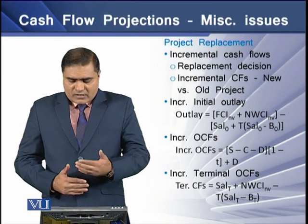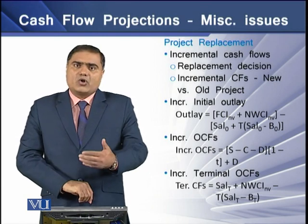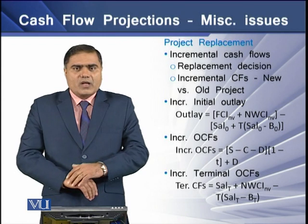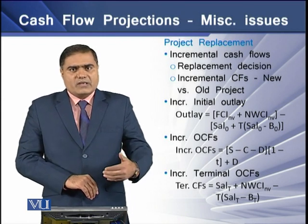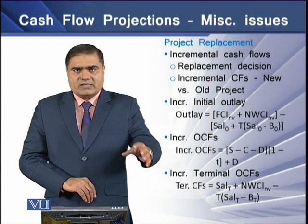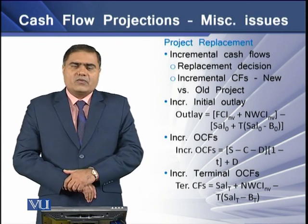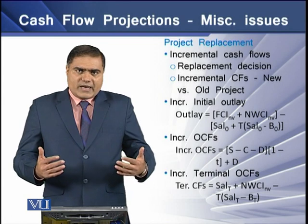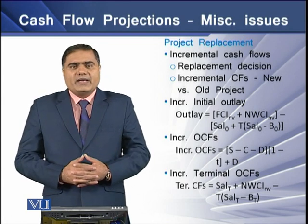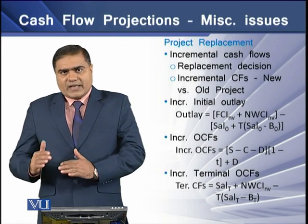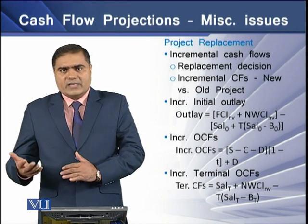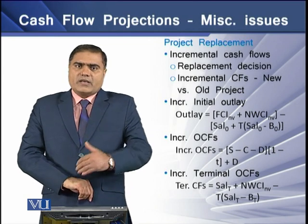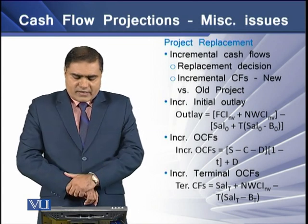The third cash flow related to the replacement project is incremental terminal cash flows, which are non-operating cash flows. To determine these, we take the salvage value from the disposal of the project's assets at the end of its life and add the recovery of investment in net working capital items. From this total, we deduct the tax-adjusted gain on disposal of the newer assets. The resulting cash flows are known as incremental terminal non-operating cash inflows.